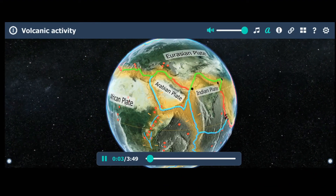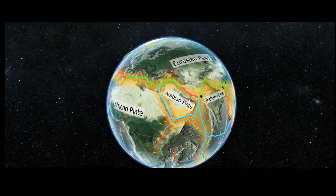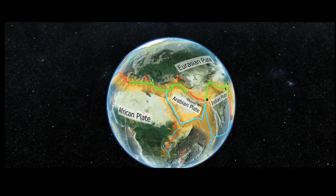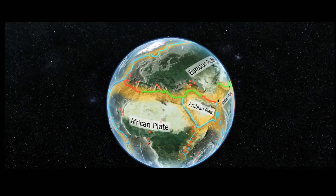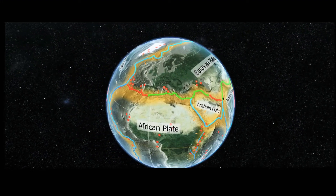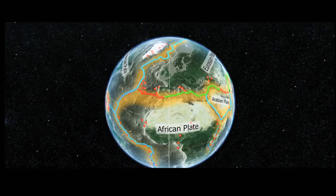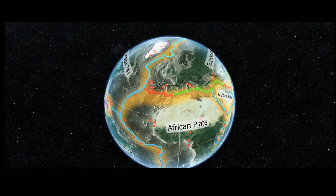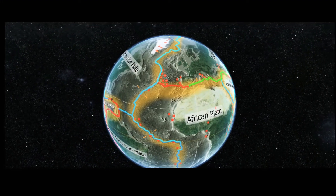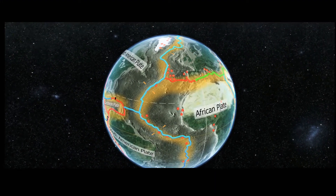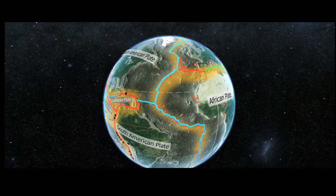Volcanic activity is a process of magma being ejected to the surface of the Earth out of its crust. Volcanoes do not occur at random; they form long chains which are essentially the boundaries of tectonic plates. Volcanic activity has an important role in mountain formation. Magma is red-hot, molten rock beneath the Earth's surface. Magma that flows to the surface is called lava, and a volcano is formed where it reaches the surface.